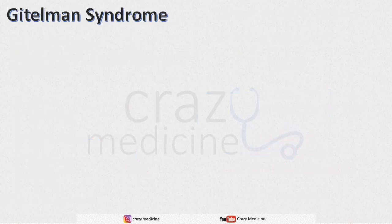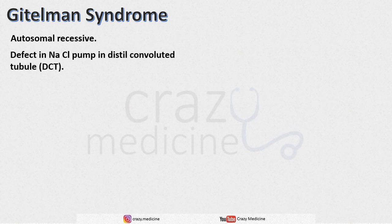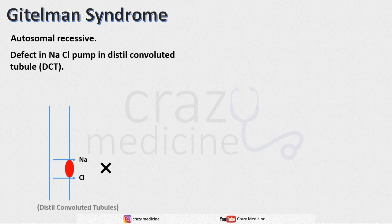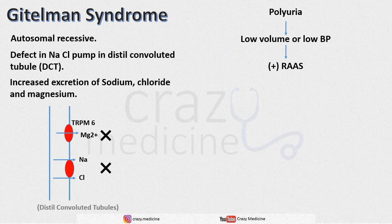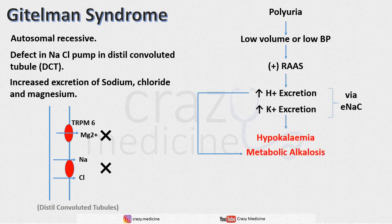Next is Gitelman syndrome. It is also an autosomal recessive disorder. Here there is a defect in the sodium-chloride pump in the distal convoluted tubule. Along with this channel, there is also a TRPM6 channel which reabsorbs magnesium — this channel is also affected. So there is increased excretion of chloride, sodium, and magnesium. Water absorption is also affected, causing polyuria and a low volume or low BP state, which will stimulate the renin-angiotensin-aldosterone system, causing metabolic alkalosis and hypokalemia — the same as in Bartter syndrome.